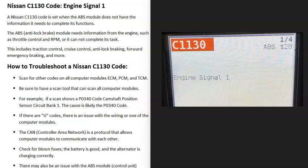Today I'm talking about a Nissan with the C1130 code, what it is and how you go about fixing it. The Nissan C1130 code is an engine signal one.